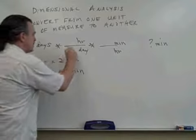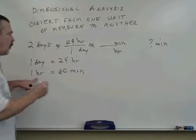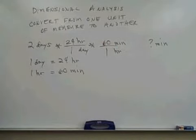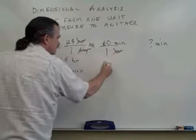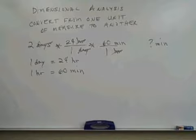So one goes with day when 24 goes with hours. One goes with hours when 60 goes with minutes. And so the days cancel, the hours cancel, and we're left with the unit of measure minutes, which is the unit of measure we wanted.